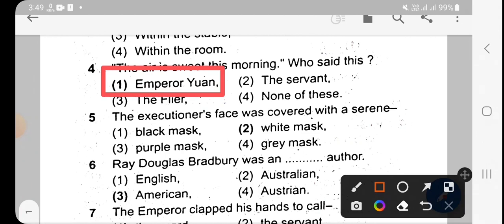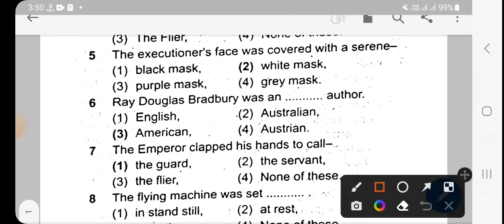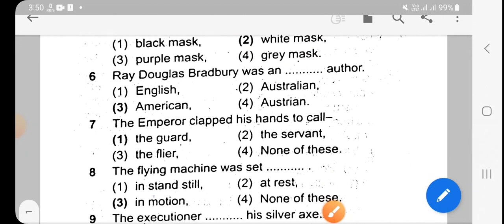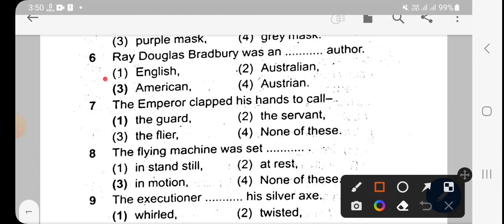Next question about marks - the options are black marks, white marks, purple marks, or gray marks. The answer is white marks. Next question: Ray Douglas Bradbury was in college. The options are about America and other places.